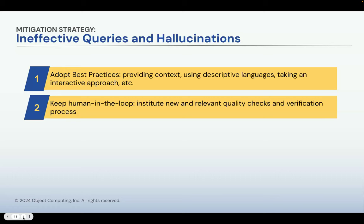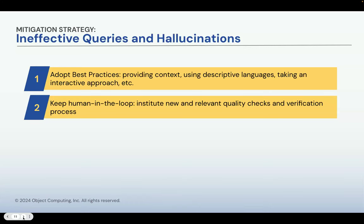Human in the loop is not really a new concept for those familiar with the AI industry. Human in the loop was invented the day AI was invented. AI was never really invented to replace a human. We always use humans as a way to guard, to be the guardrail, and to make sure it's doing the right thing. That's especially true for Gen AI applications — it's important to add new and relevant quality checks and verification processes to make sure your SMEs and experts are able to be involved in this process, whether that's a thumbs up or thumbs down, or a ranking process where you like certain answers better than others.